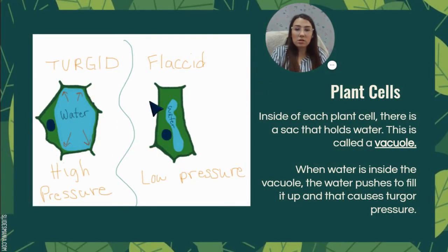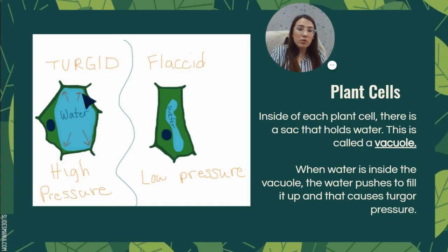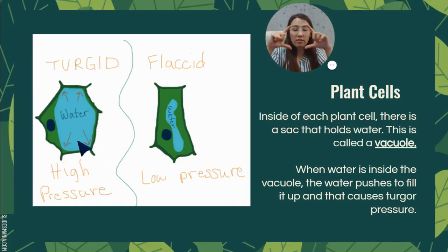Let's look at what the plant cells look like. Inside of each plant cell there's a special place that holds water called the vacuole. You can see these — they are highlighted blue to show that they're holding water. When the water is inside, remember it's turgor pressure — it pushes, it applies pressure on the outside of the vacuole. Here, with high pressure, meaning there is water and it has enough water, the pressure is pushing on the cell to make it expand all the way.